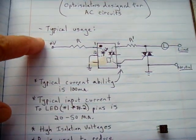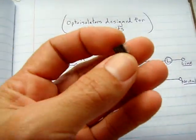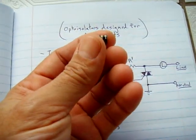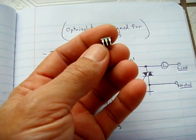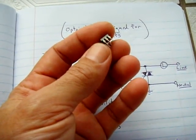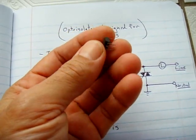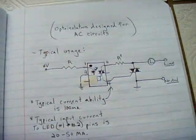I'm going to show you the typical usage of it, and this is what one looks like right here. The regular optoisolator in the previous video had four pins, two on each side, and this one has three on each side.